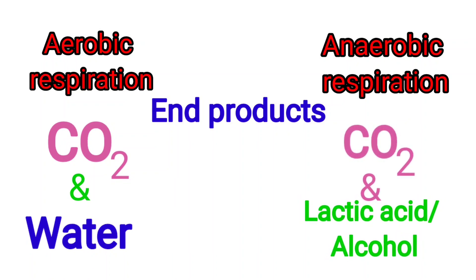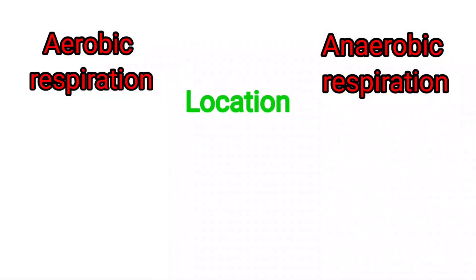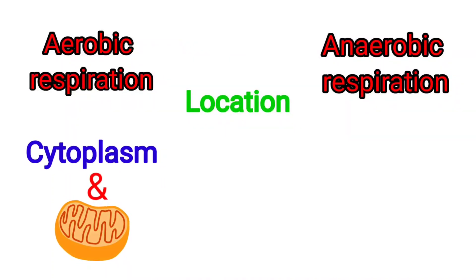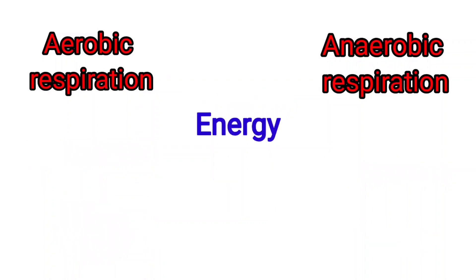The end products of anaerobic respiration are carbon dioxide along with either lactic acid or alcohol. Regarding location, aerobic respiration takes place in the cytoplasm and mitochondria, whereas anaerobic respiration takes place only in the cytoplasm.